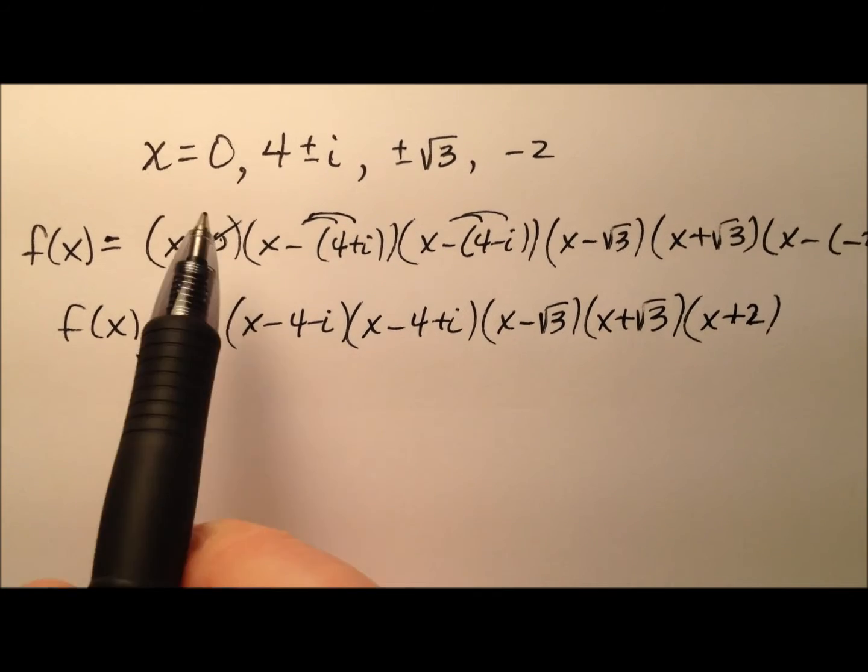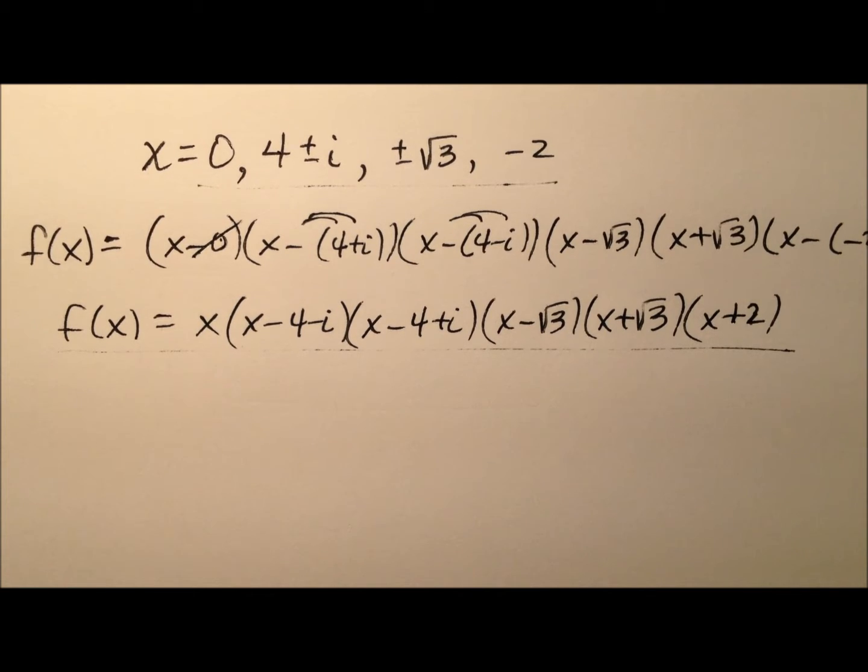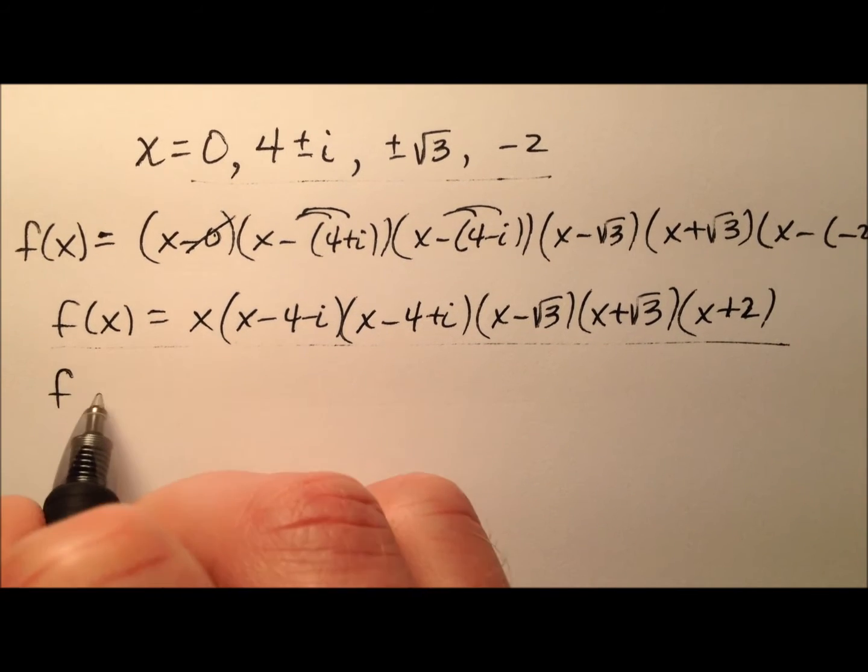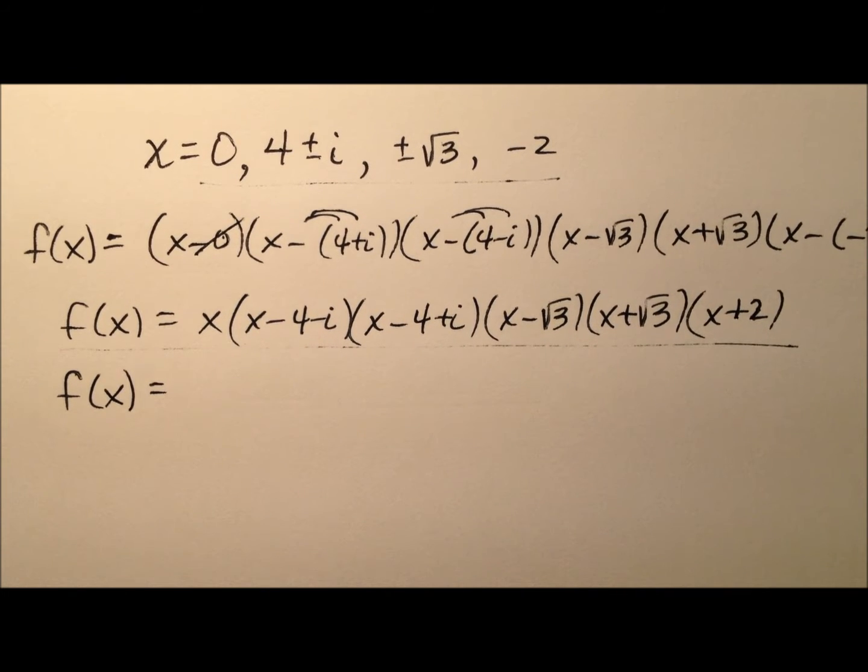So what I've done here, I took each of these roots and I just wrote a polynomial in factored form from those roots. So now if I'm going to finish up by writing this in standard form, I need to multiply all this stuff out.